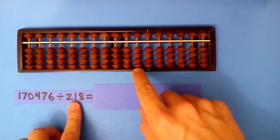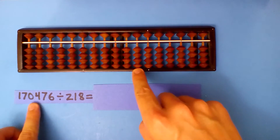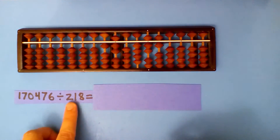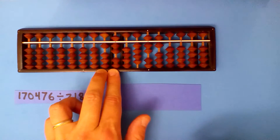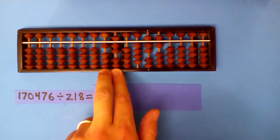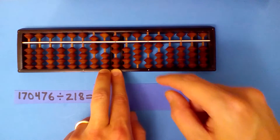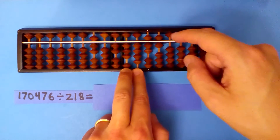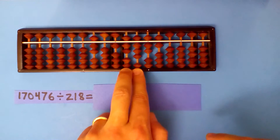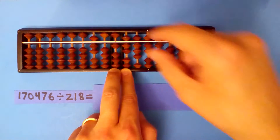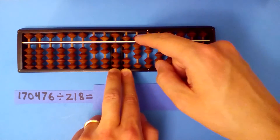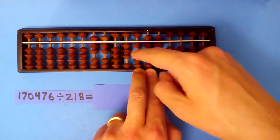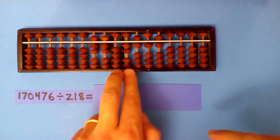What is this number divided by this number? We have 170476 divided by 218. There are three more numbers in the dividend, so we start here. 2 goes into 17 — it's more than twice, so seven times. Seven times 2 is 14, seven times 1 is 7, seven times 8 is 56. Now 218 into 17 again — same as before: seven times 2 is 14, seven times 1 is 7, seven times 8 is 56.